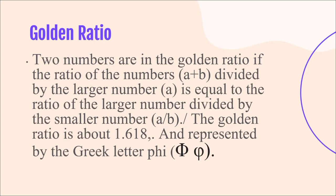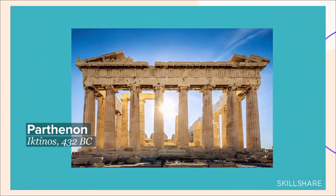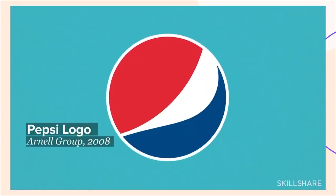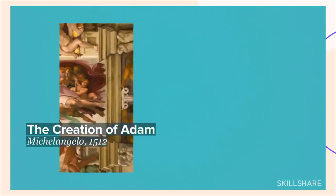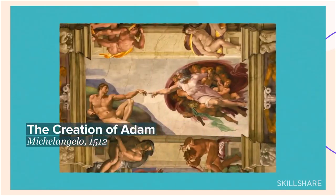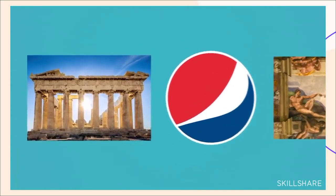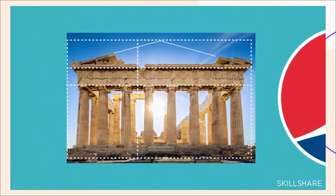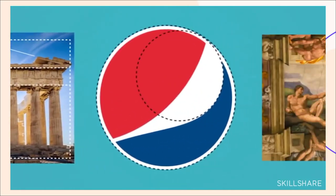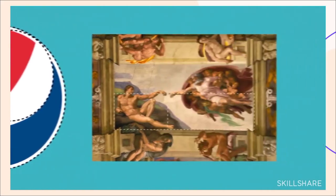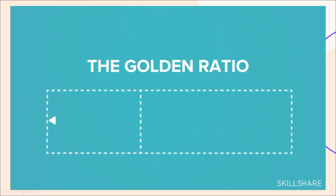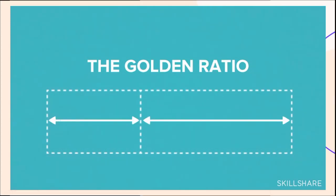The worlds of architecture, design, and art may seem like open, creative endeavors, but they may not be quite as spontaneous as they first appear. When we look at great works like these, there are similarities that we just can't ignore. All these instances adhere to the same compositional proportions, known as the Golden Ratio.